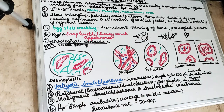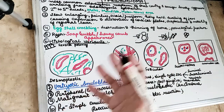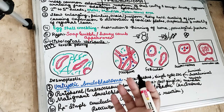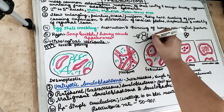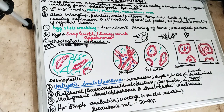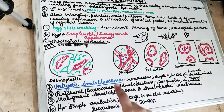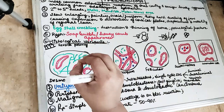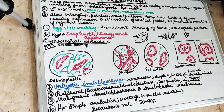Large lesions cause expansion, distortion, and destruction of the cortical plates, leaving very thin cortical plates. As the tumour grows over time, only a thin shelf of bone is left. On digital palpation, when pressure is applied, this thin shell of bone cracks — producing what we call the egg-shell crackling sound on digital palpation.